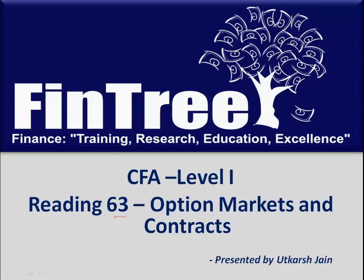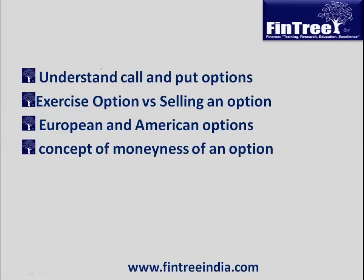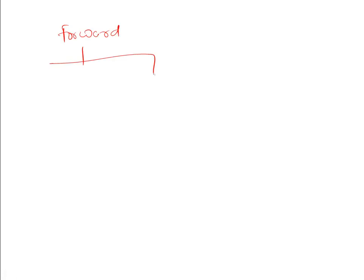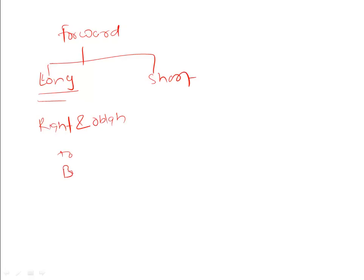Now, what is so different about options? In the earlier case, when we had forwards and futures, we saw that there were two possible sides you could take: either long or short. The person who was long on a forward contract had a right and obligation to buy, and the person who was short had a right and obligation to sell.